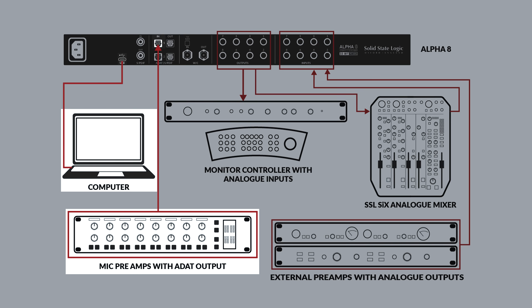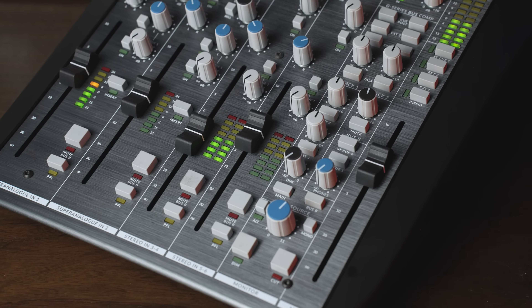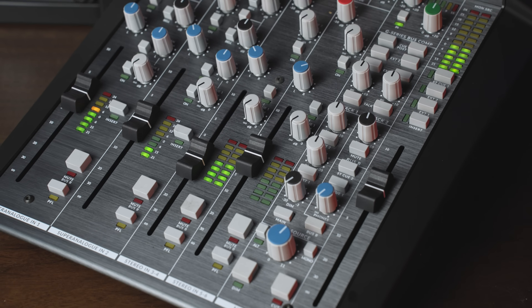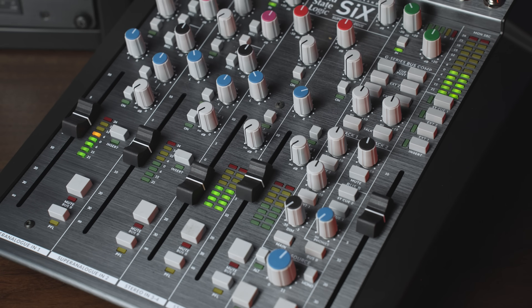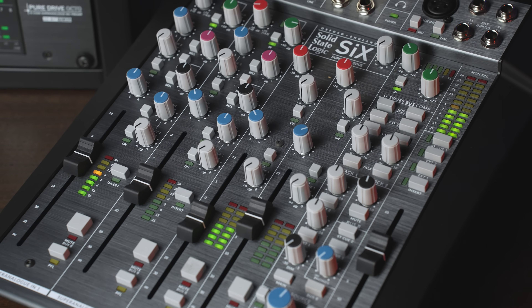The DAW outputs are then sent out via the AlphaRate's analogue outputs to the 6's stereo line inputs and external inputs to use the mixer as our monitor control, but this could easily be any external monitor controller you wish to use.